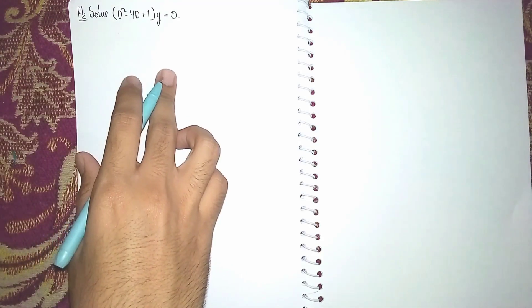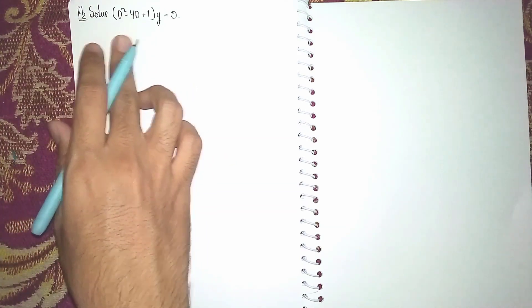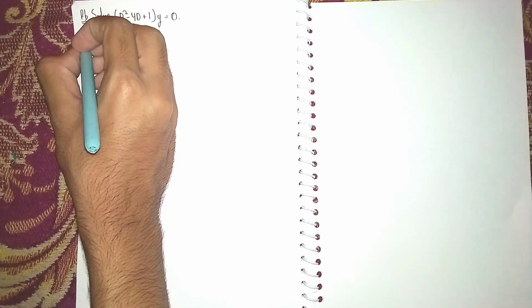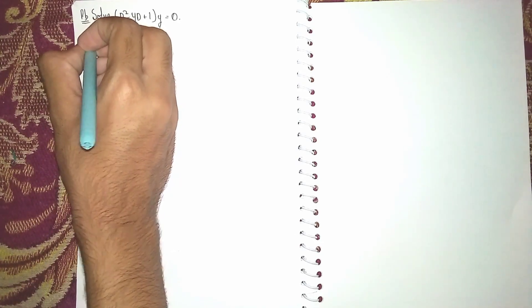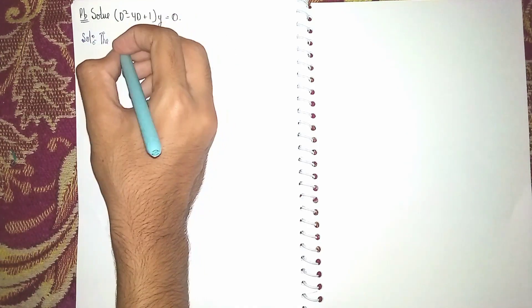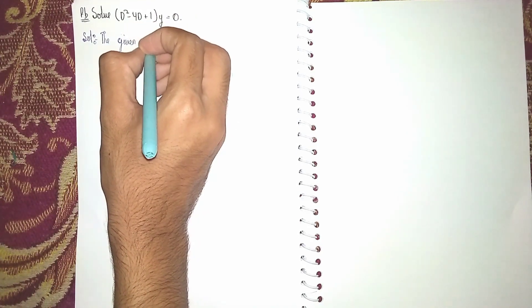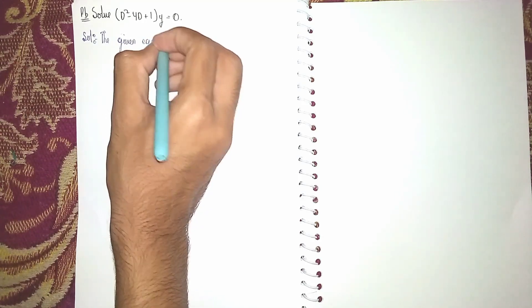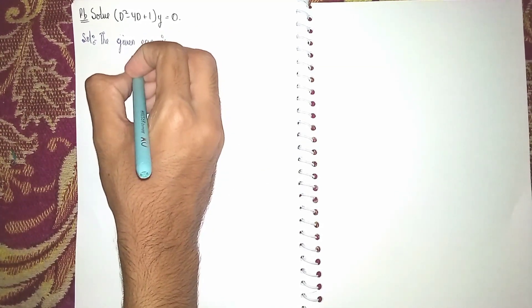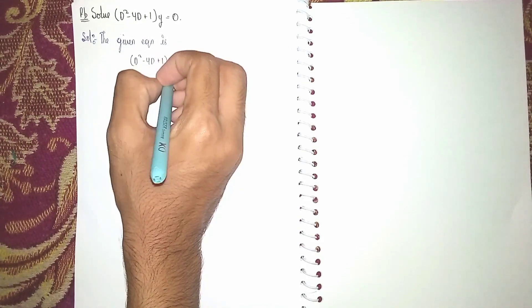Hello students, welcome back to my channel. This question is (D² - 4D + 1)y = 0, which is a homogeneous linear differential equation given in symbolic form. The given equation is D² - 4D + 1 into y is equal to 0.